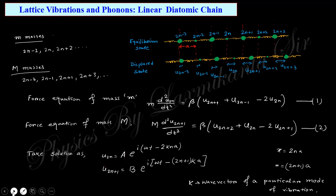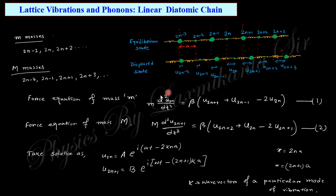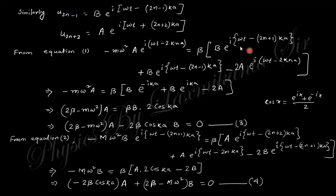For u₂ₙ₋₁ we use constant B, and for the 2n+2 atom (small m) we use constant A — that is why constants A and B arise. If we substitute this solution into equation 1 carefully, the second derivative and the terms u₂ₙ₊₁ and u₂ₙ₋₁ give B and A terms respectively. After simplification, cancelling common factors, we obtain equations involving constants A and B.